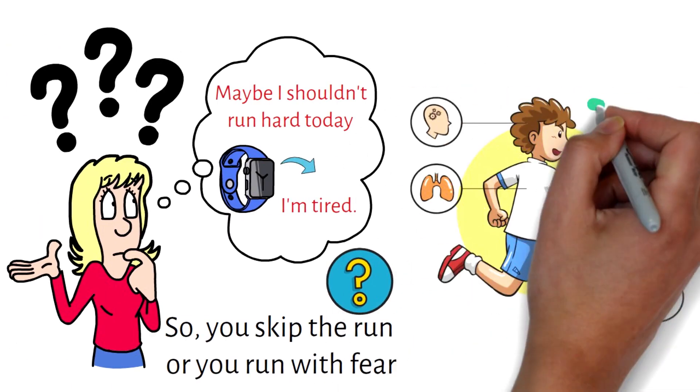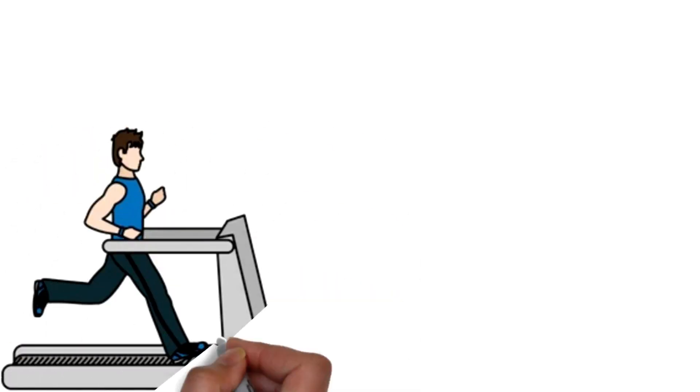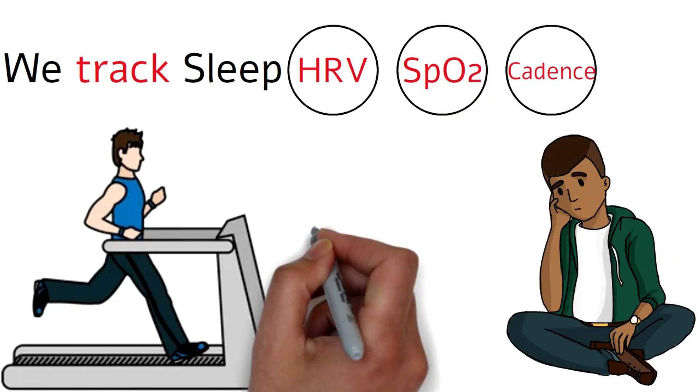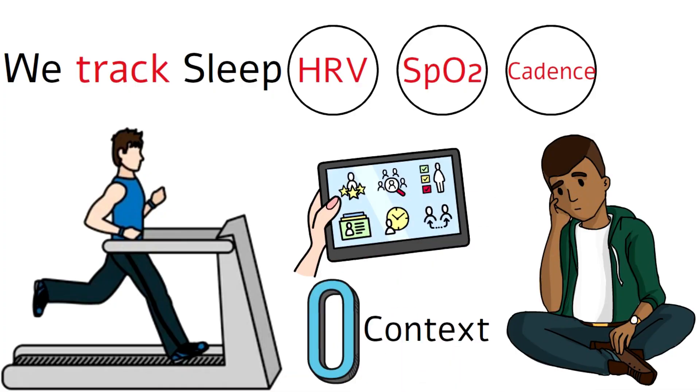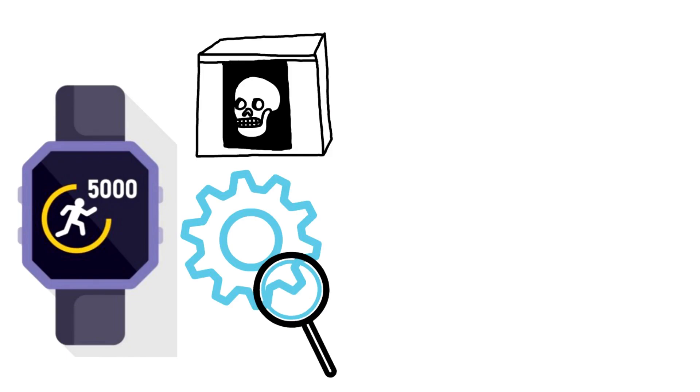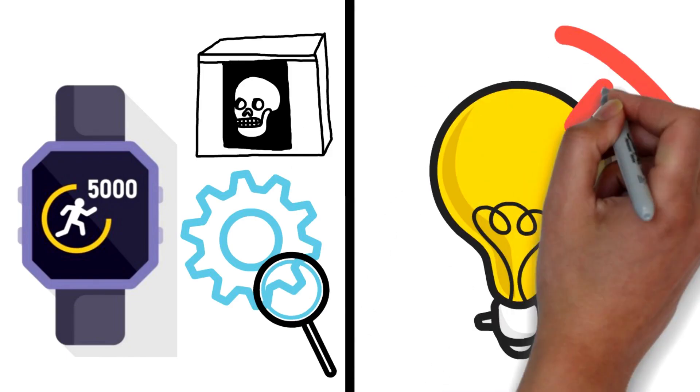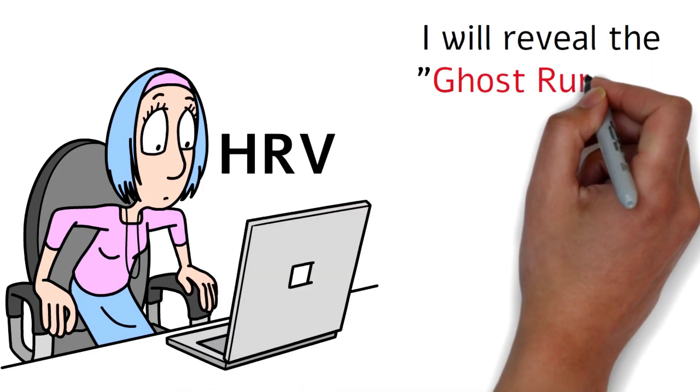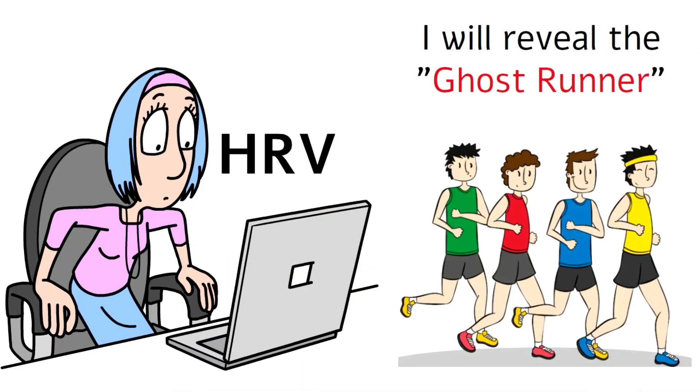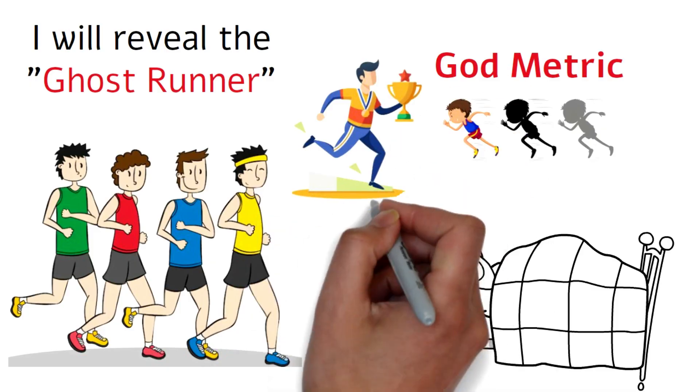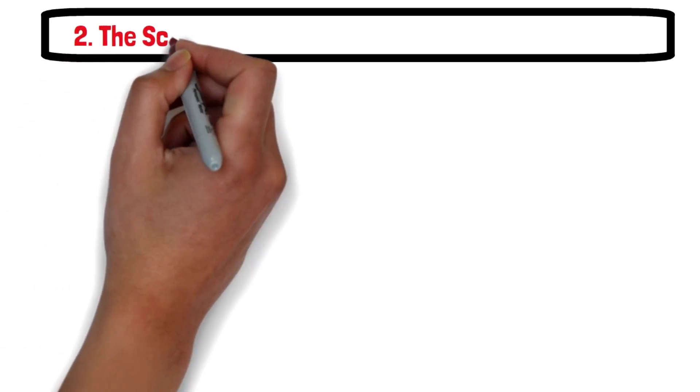We are living in the golden age of data. We track sleep, HRV, SpO2, cadence. But we have a problem: we have too much data and zero context. Your watch is an incredible sensor, but it's a terrible coach. It sees what is happening, but it has no idea why it's happening. Today I'm going to explain the science of HRV, I will reveal the ghost runner glitch that ruins your stats, and I will give you the god metric hidden in your sleep data that matters more than your sleep score.